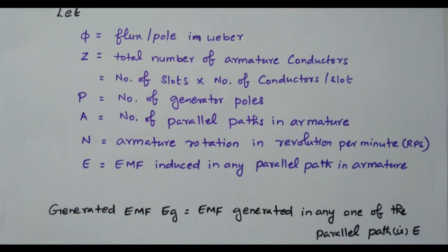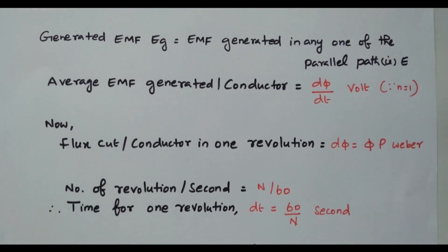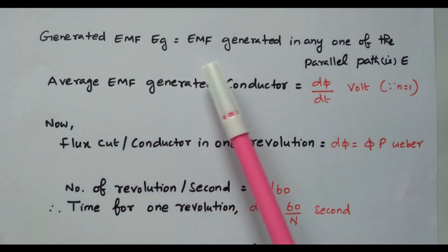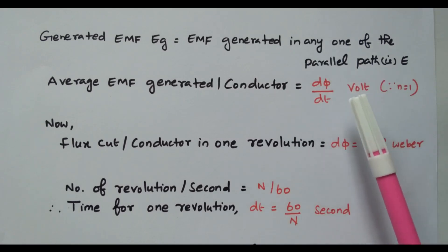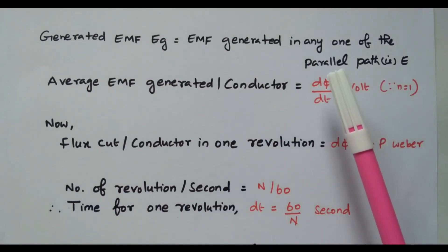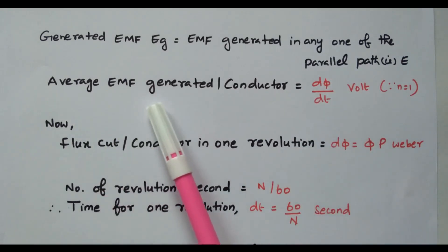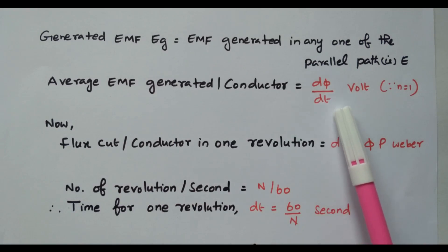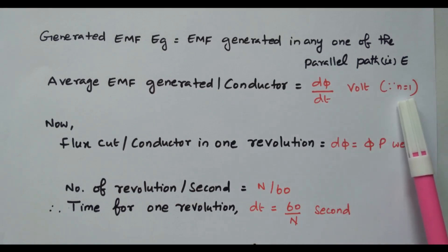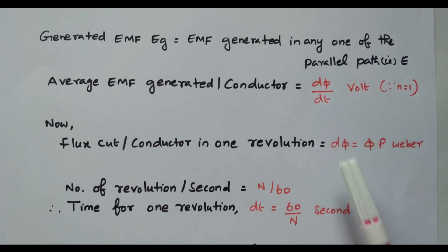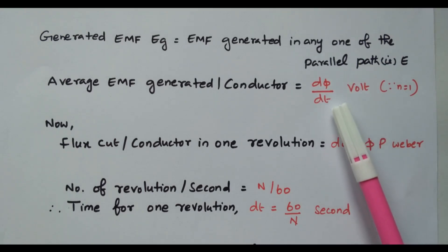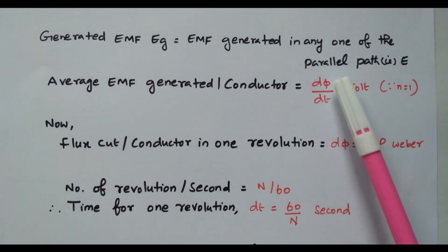Now we will go to the EMF generation. The generated EMF equals the EMF generated in any one of the parallel paths. The average EMF generated per conductor is dφ/dt, that is the rate of change of flux, where we consider N equal to 1. If we find the values of dφ and dt, we can easily identify the average EMF generated.